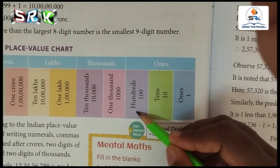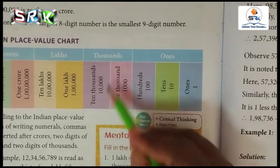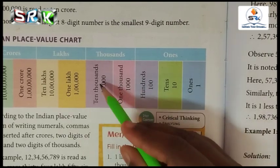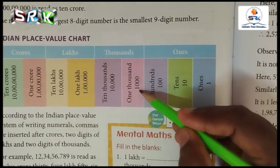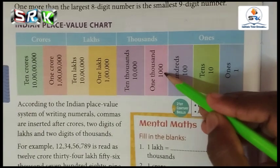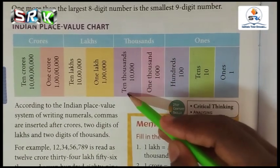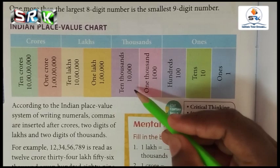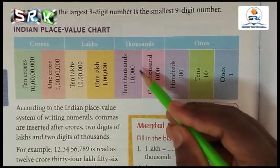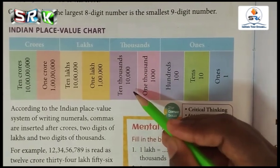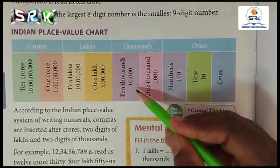Next is the thousands period. You have to write in here: one thousand and ten thousand. Thousand has three zeros and four digits. Ten thousand — count the zeros — you are having four zeros and five digits. So five digits you should write in for ten thousand.